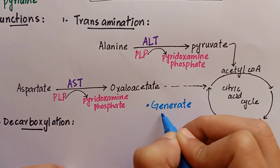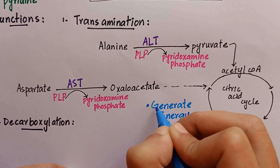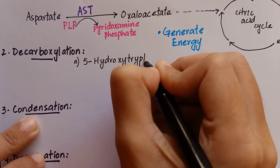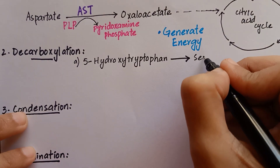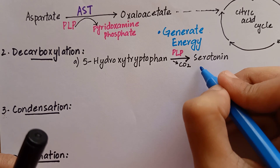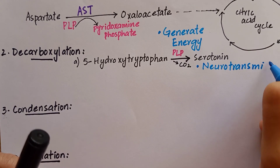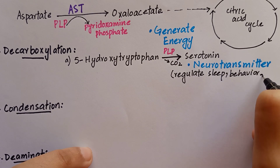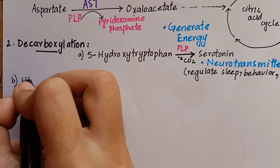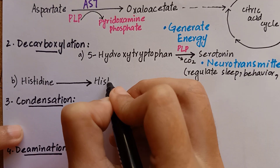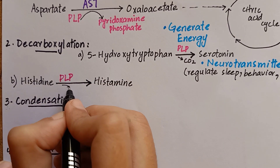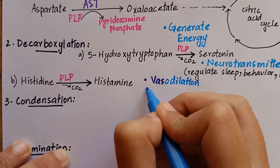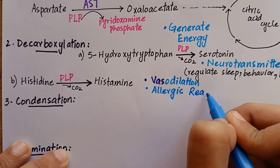These two keto acids enter the citric acid cycle and get oxidized to generate energy. Hence, vitamin B6 is an energy-releasing vitamin. Pyridoxal phosphate also causes decarboxylation of 5-hydroxytryptophan, producing serotonin, which is a neurotransmitter involved in regulation of sleep, behavior, and blood pressure. Another example is decarboxylation of histidine, resulting in formation of histamine, which is a vasodilator involved in allergic reactions causing inflammation.